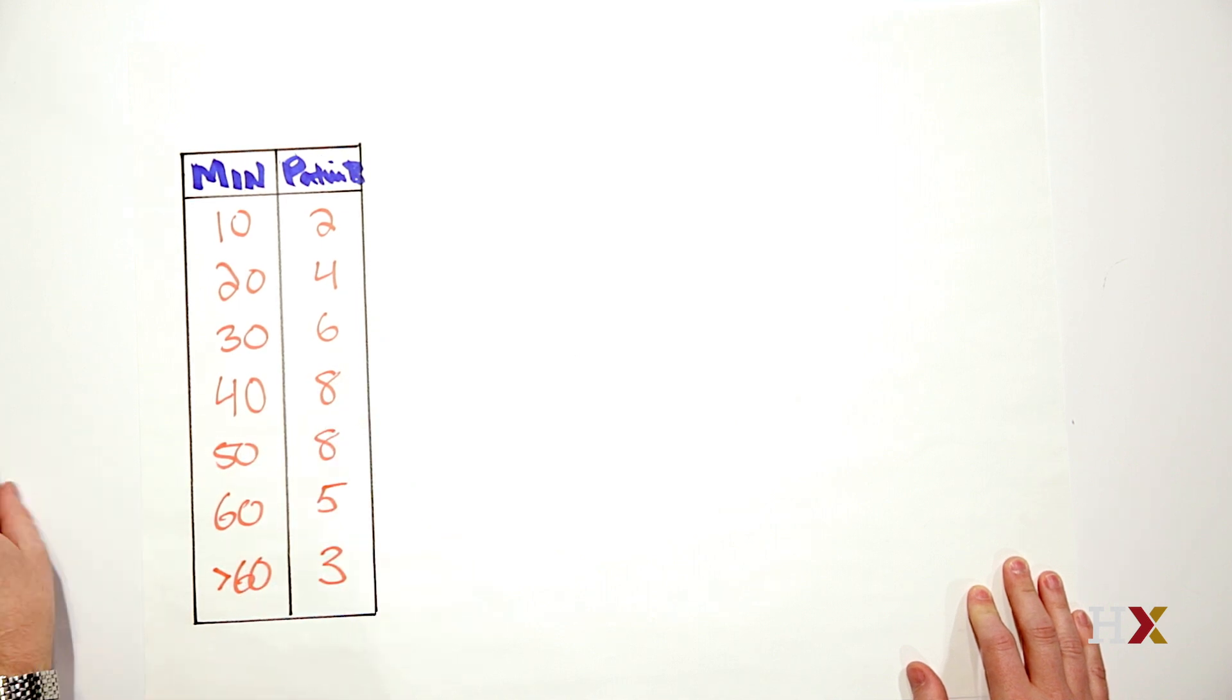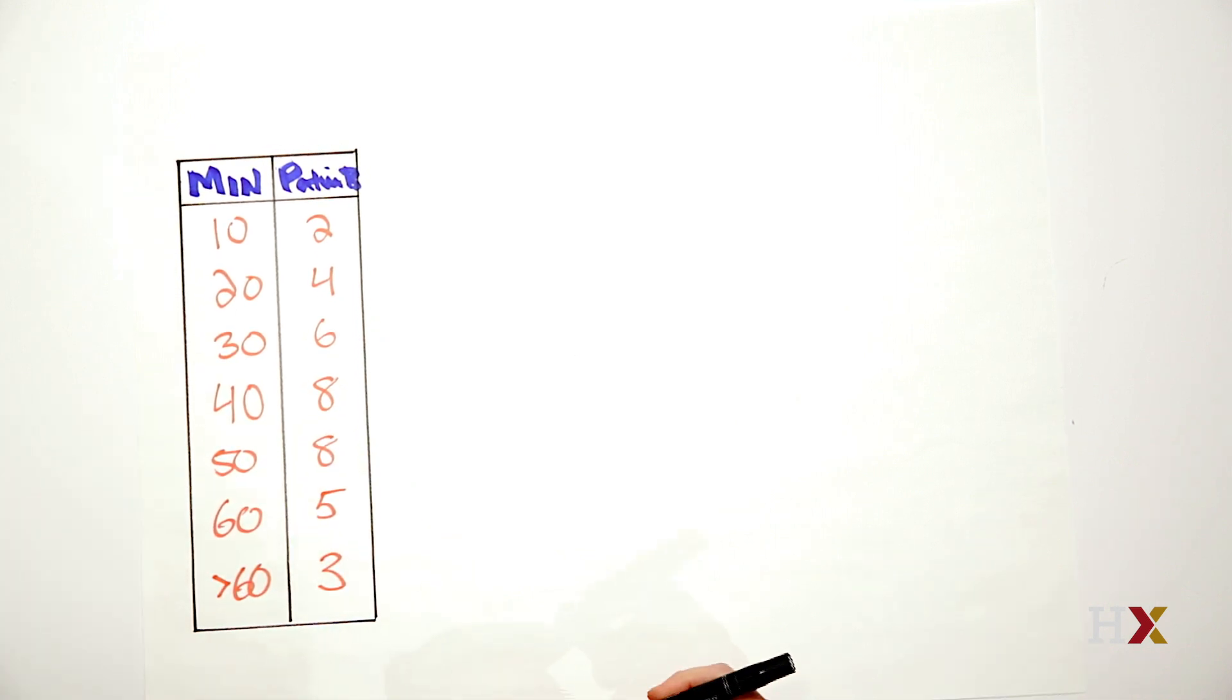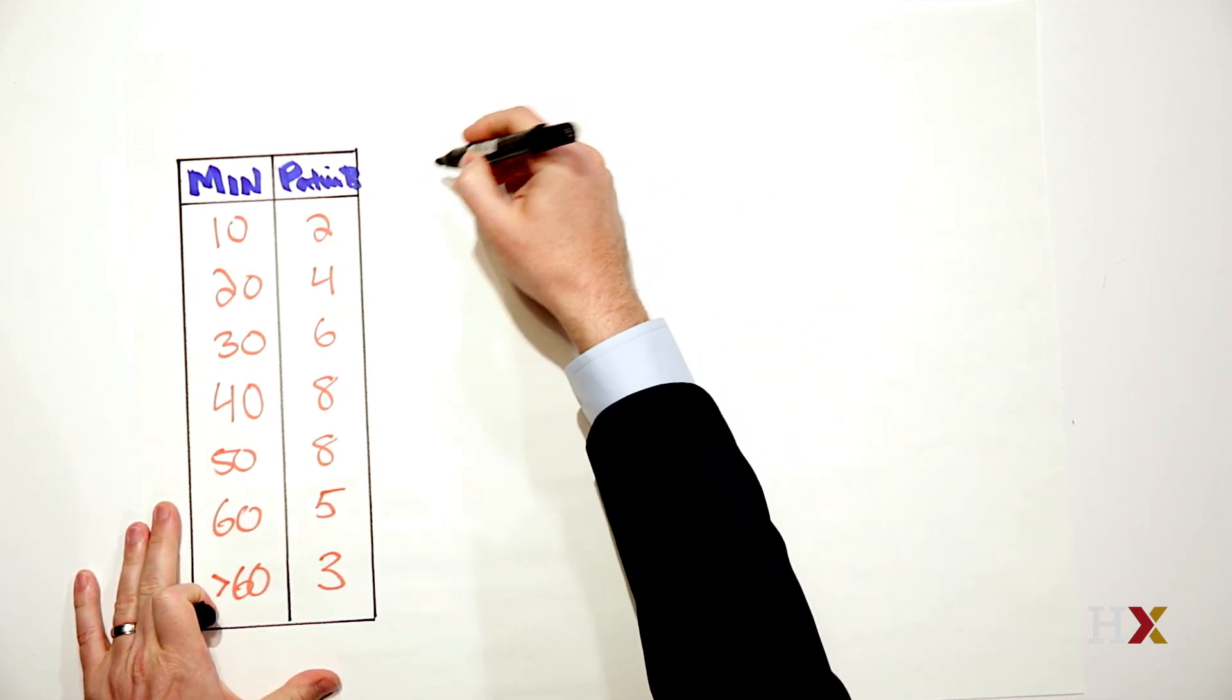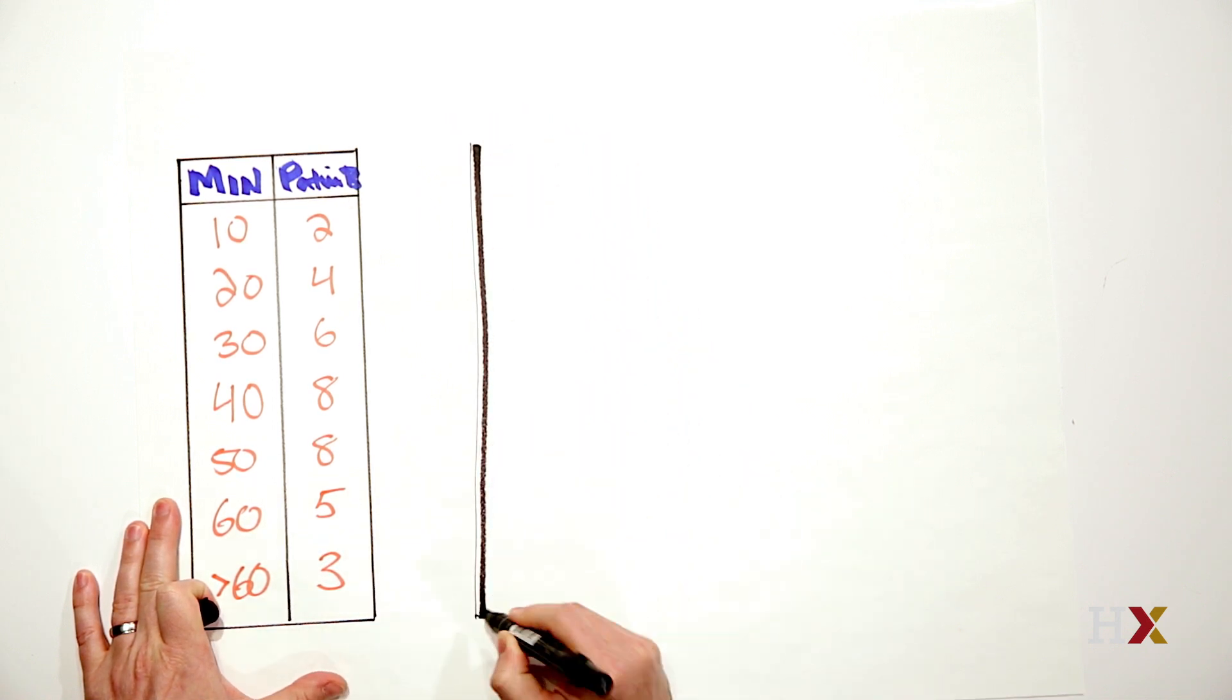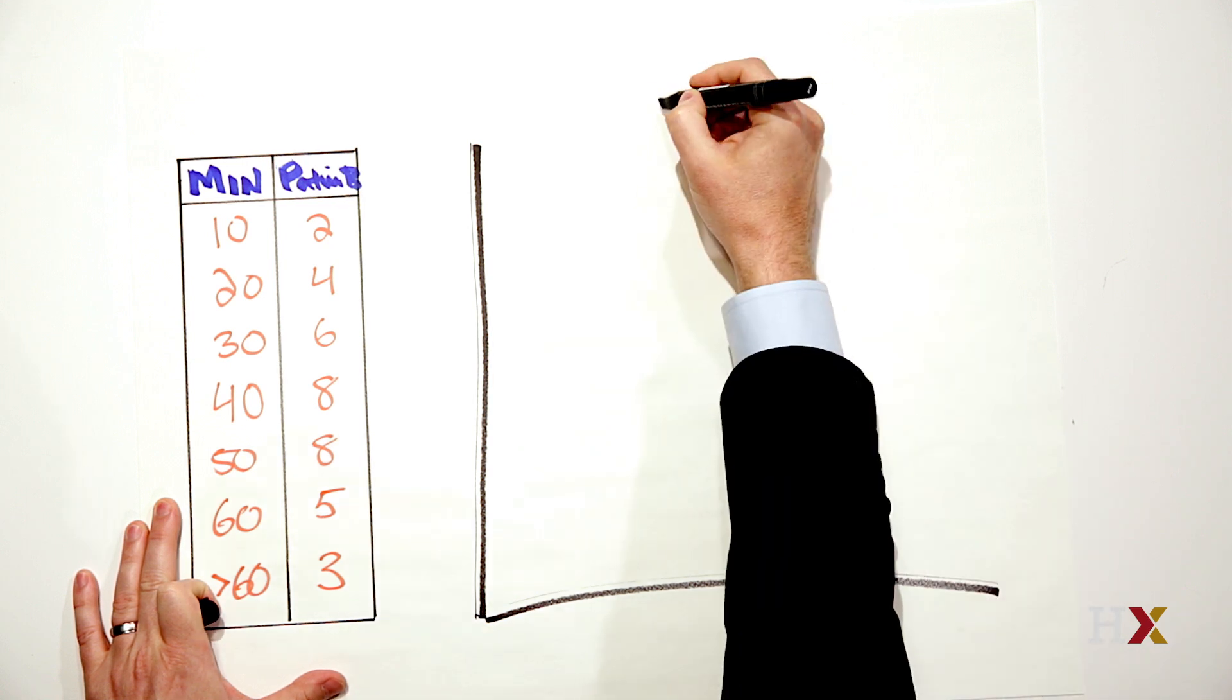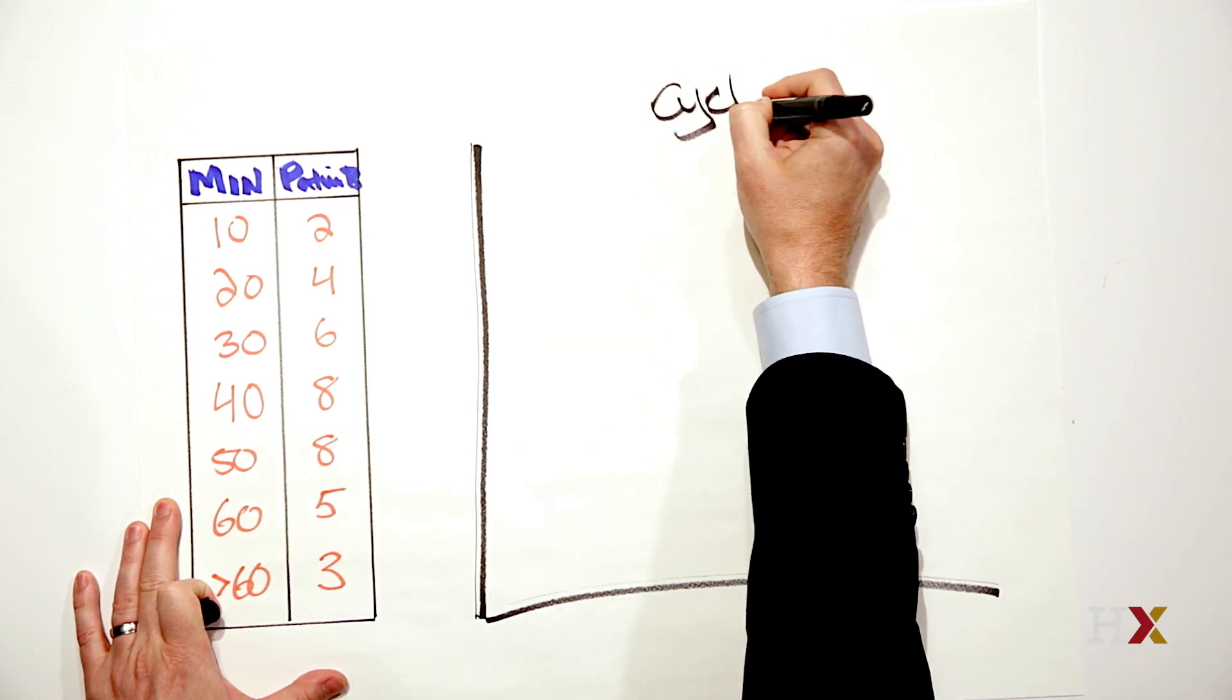What we're going to do is draw the actual histogram. A histogram looks very much like a bar chart, but the bars are organized by the time interval. So let's draw our bar chart and we're working on cycle time.